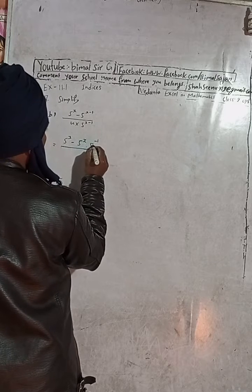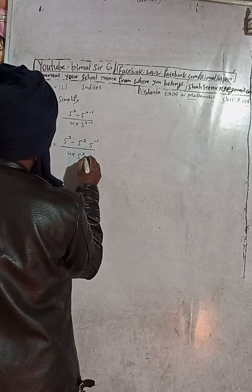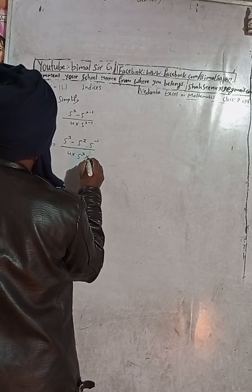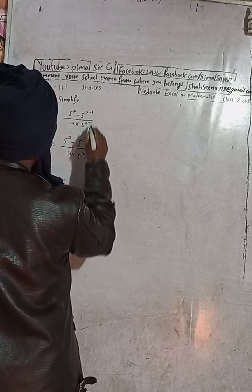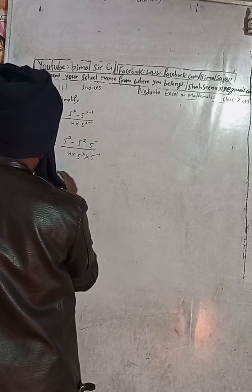When you add again this will get same here. This 4 into 5 to the power x, or you can write like this, and then 5 to the power minus 1.